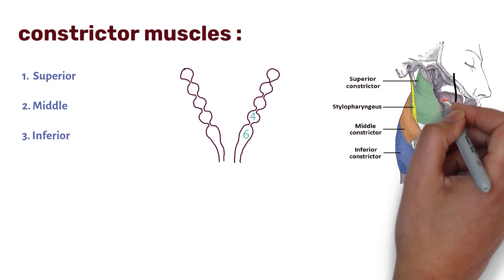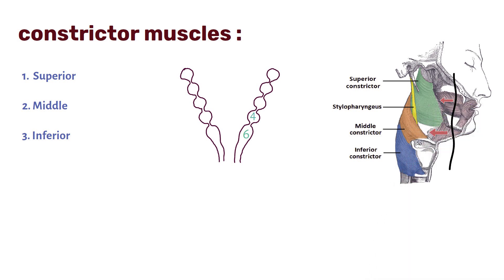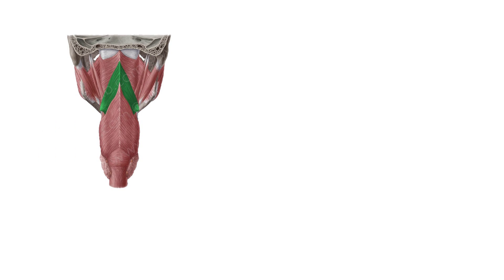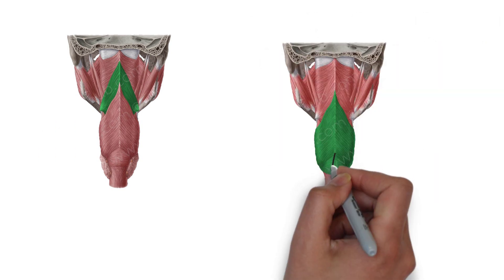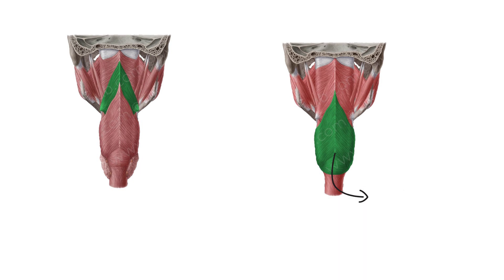Then from these, the fibers pass into posterior walls and lateral walls of pharynx. And then at the end, fibers from two sides meet in median fibrous raphe.